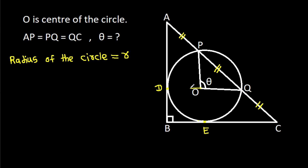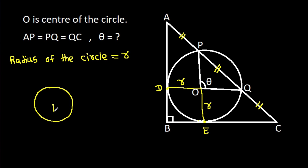Then OD will be R and OE will be R. We know that in any circle, the radius and tangent are perpendicular to each other, so this angle will be 90 degrees and this angle will be 90 degrees.